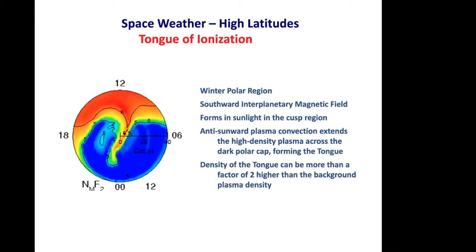There are a wide range of weather features. I'll show three weather features at high latitudes, one at mid-latitudes, and one at low latitudes. The first at high latitudes is the tongue of ionization. It forms in a winter polar region when the interplanetary magnetic field turns southward, forming in sunlight near the cusp. Anti-sunward plasma convection extends high-density plasma across the dark polar cap, forming the tongue. The density can be more than a factor of two higher than the background plasma density.